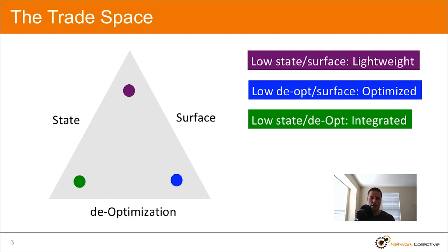The green circle is in the bottom left corner, so it has low state and low deoptimization. Okay, so what? This might be a design that you consider to be integrated because it has high surface interactions. If the state is low, but the components are tightly coupled in such a way where maybe the state is not duplicated between different components. So for example,